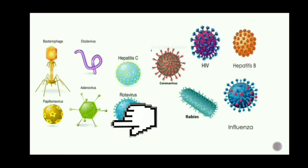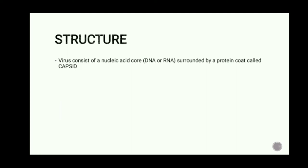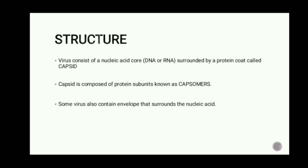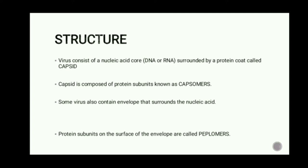Next we are discussing the structure. A virus consists of a nucleic acid core surrounded by a protein called the capsid. The capsid is composed of a large number of protein subunits known as capsomeres. Certain viruses contain an envelope that surrounds the nucleic acid. The envelope is acquired by a progeny virus during release by budding through the host cell membrane, and the protein subunits are exposed as projecting spikes on the surface of the envelope, called peplomers. We can see all this clearly in the picture on the next slide.